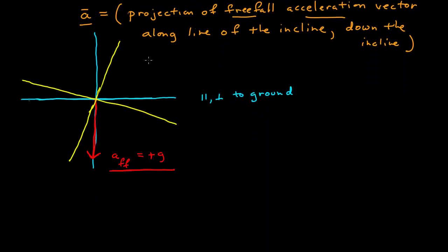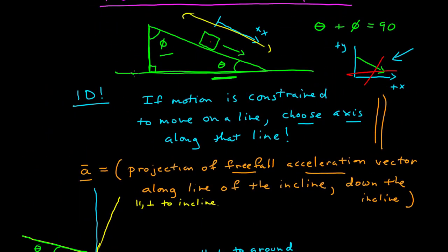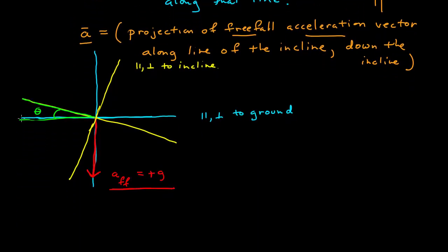And so this set of axes is parallel and perpendicular to incline. The next thing to do is to be able to relate these angles. This angle right here is the angle between the ground and the horizontal. It's the angle between the line parallel to the ground and the line parallel to the incline.